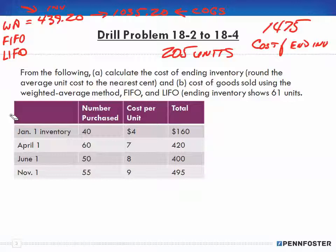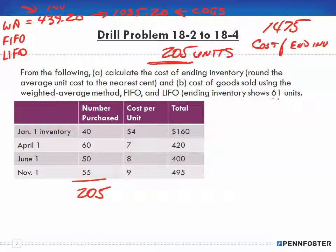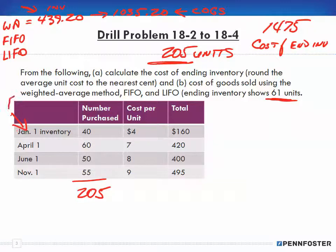Since we have 205 units — and if you watched the videos on FIFO and LIFO, here's where a lot of people get tripped up. There are 205 units and the ending inventory is 61 units. Students do one of two things wrong: they don't pay attention to first-in first-out or last-in first-out. First-in first-out means the first ones in are the first ones out. Last-in first-out starts with November because they were the last ones in and would be the first ones out.